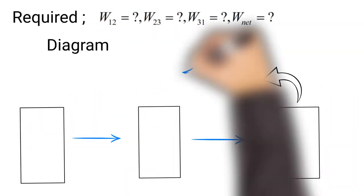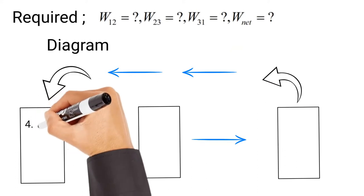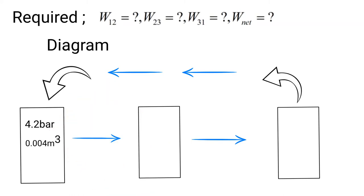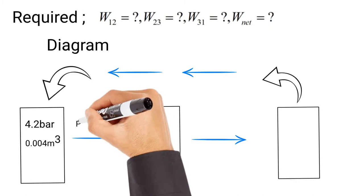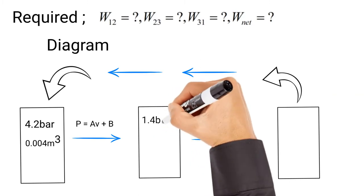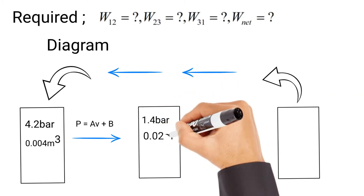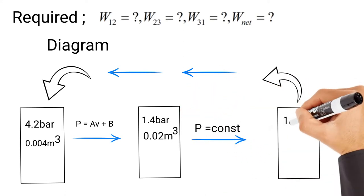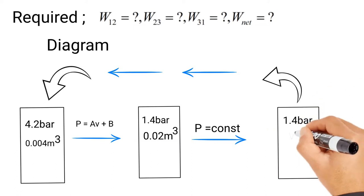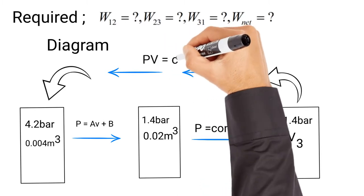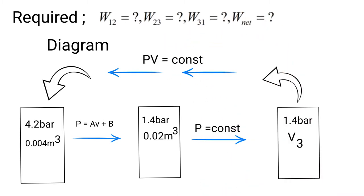Let's use a diagram to picture it. The process starts from State 1 at 4.2 bar and 0.04 m³, obeying a linear law P = AV + B, and moves to State 2 at 1.4 bar and 0.02 m³. It then obeys a constant pressure law to State 3, where we have 1.4 bar and V3 (unknown). Finally, it returns from State 3 back to State 1 using the law PV = constant.